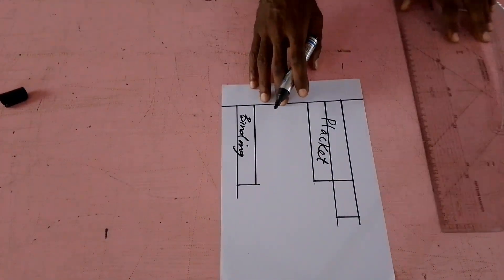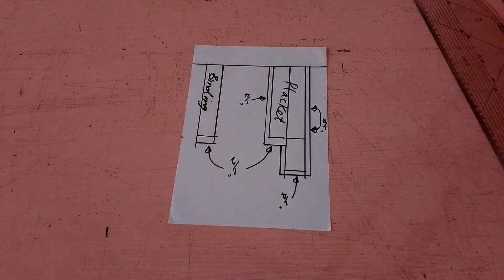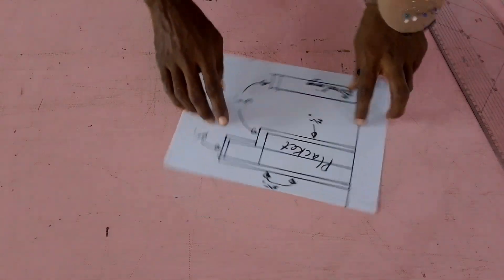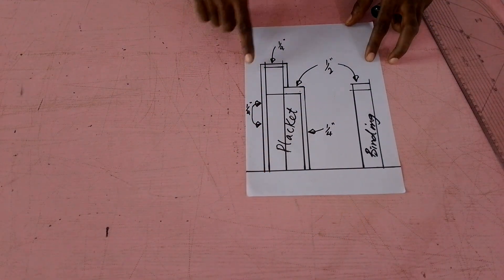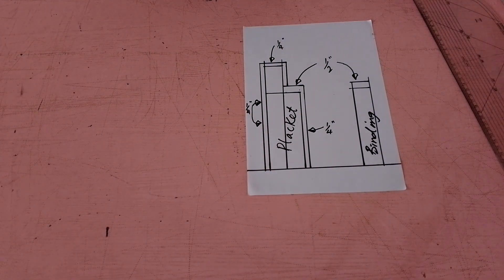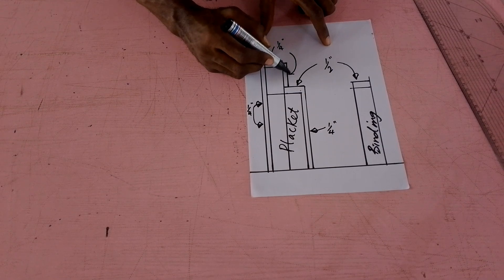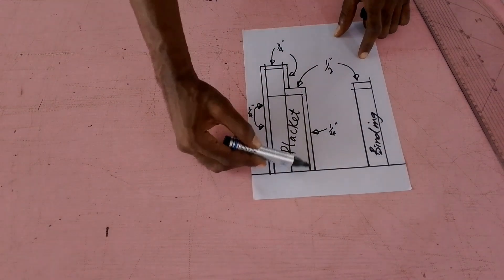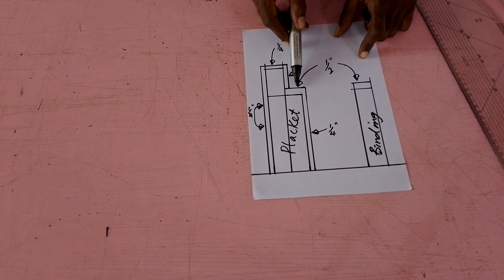The next thing we're going to do is add seam allowances. So here is the seam allowance. You're doing quarter inch, quarter, quarter. Here also you're doing quarter and up here half inch.